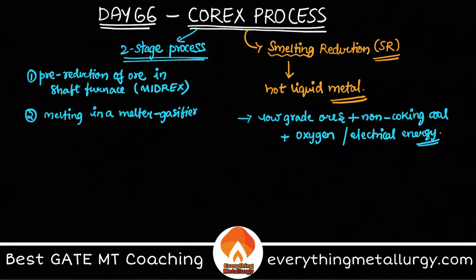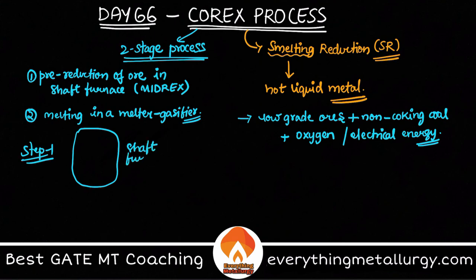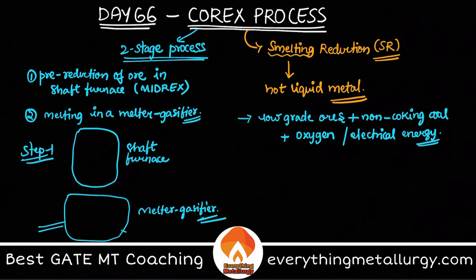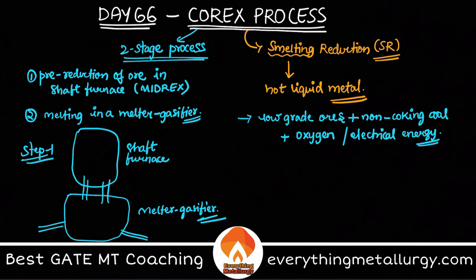The melter gasifier is a reactor where gas is used to produce the required temperatures. In the schematic, you have a pre-reduction unit which is the shaft furnace on the top, and below it you have the melter gasifier. Coal and oxygen are injected into the melter gasifier — it combusts, and there are channels provided between the two chambers so the CO gas can travel upwards into the shaft furnace.